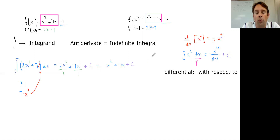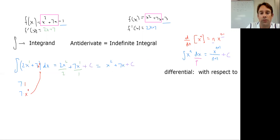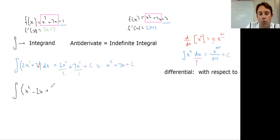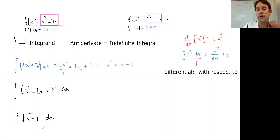These are called indefinite integrals or antiderivatives. We're going to practice a few of these. First, find the antiderivative of x² − 2x + 3. Also try the square root of x plus 7. Go ahead and pause the video and see what you can do with these.